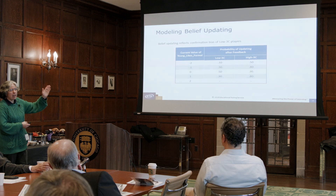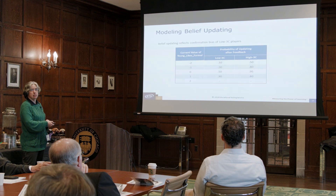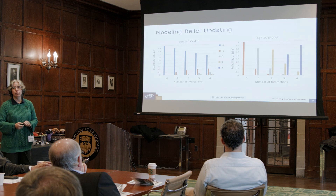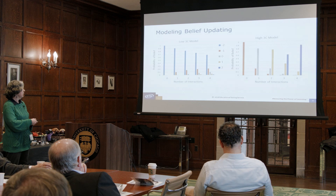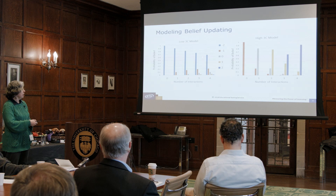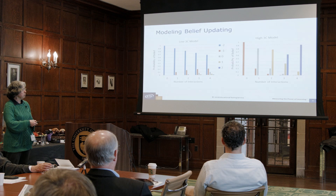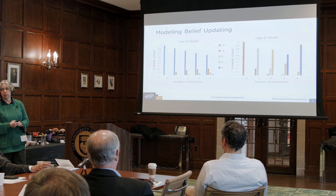The high 3C has a very different profile. I graphed what it would look like over four different interactions with a young NPC. The low 3C starts at negative two and after four interactions is still believing, in general, that the young person prefers to be treated informally. Where the high 3C model — by the third interaction — is pretty sure they want to be treated formally. So they're adapting their beliefs more quickly.